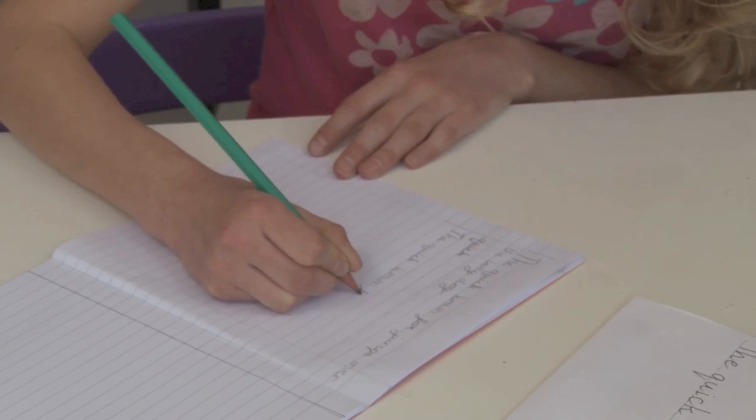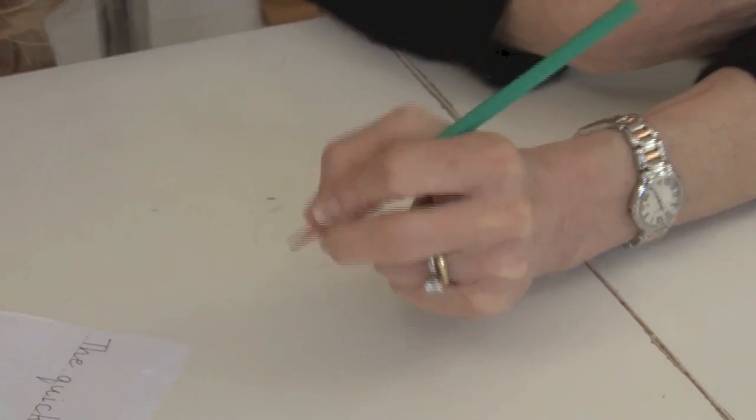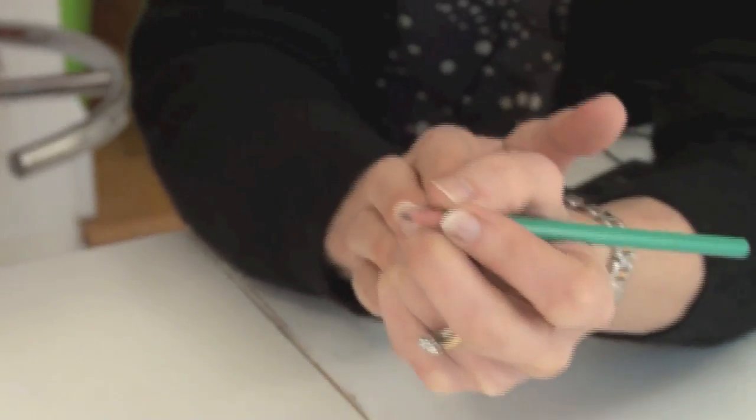In an ideal sense, what you want is what we call a dynamic tripod grasp. Dynamic meaning it's active, so it moves. But what you want is what we call separation of hands, so that the ring and the little finger stay still and this side of the hand works independently to the other side of the hand.